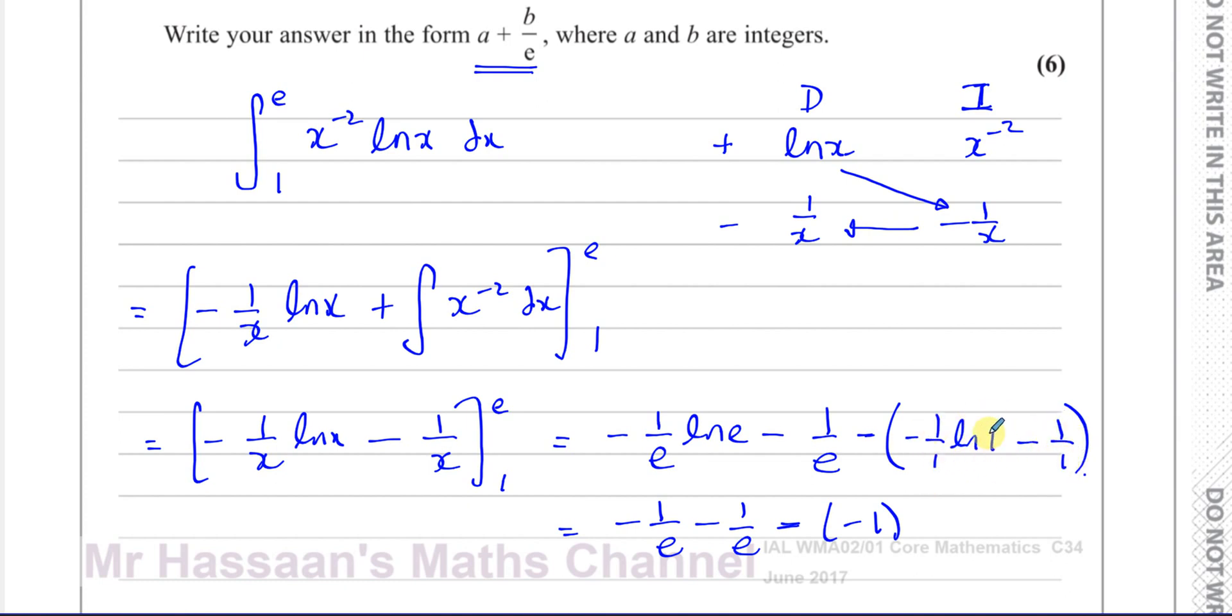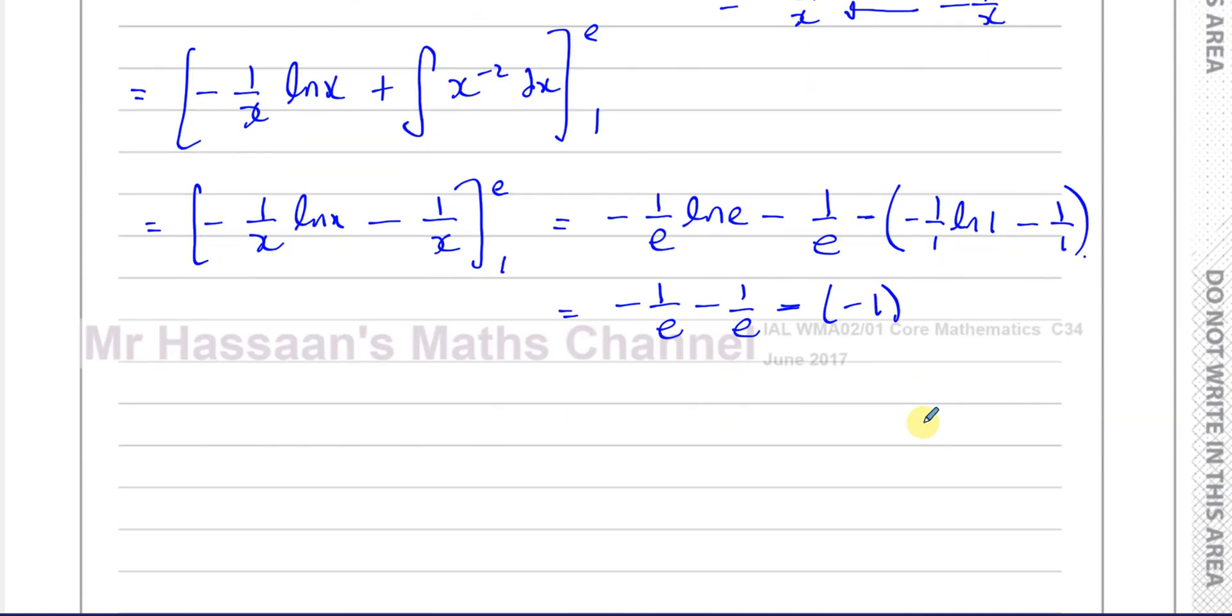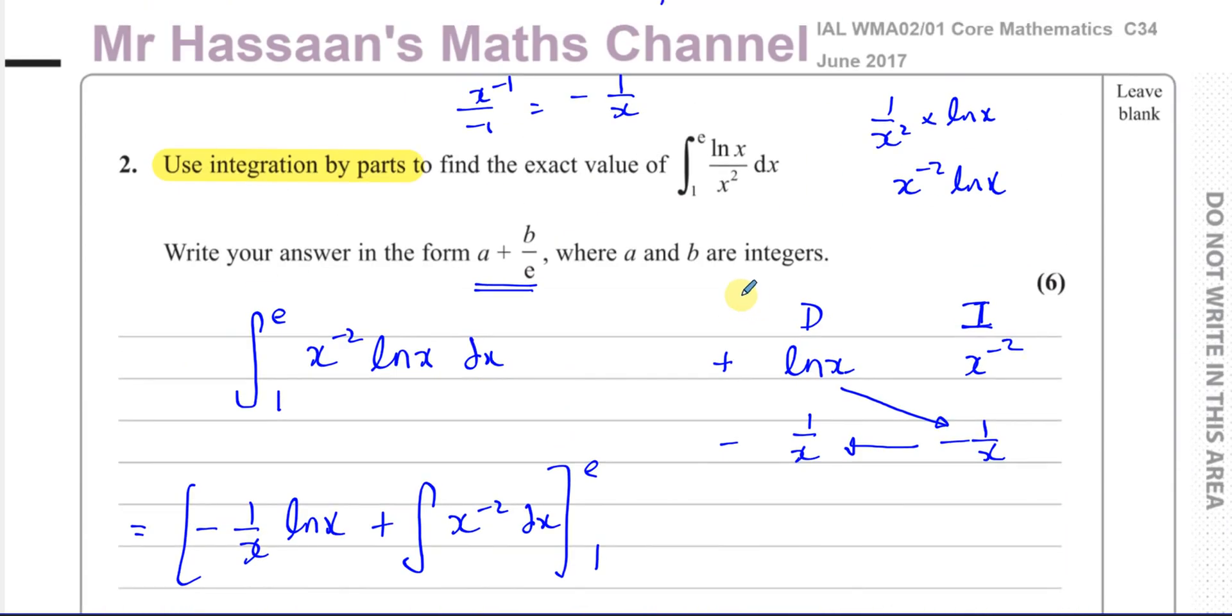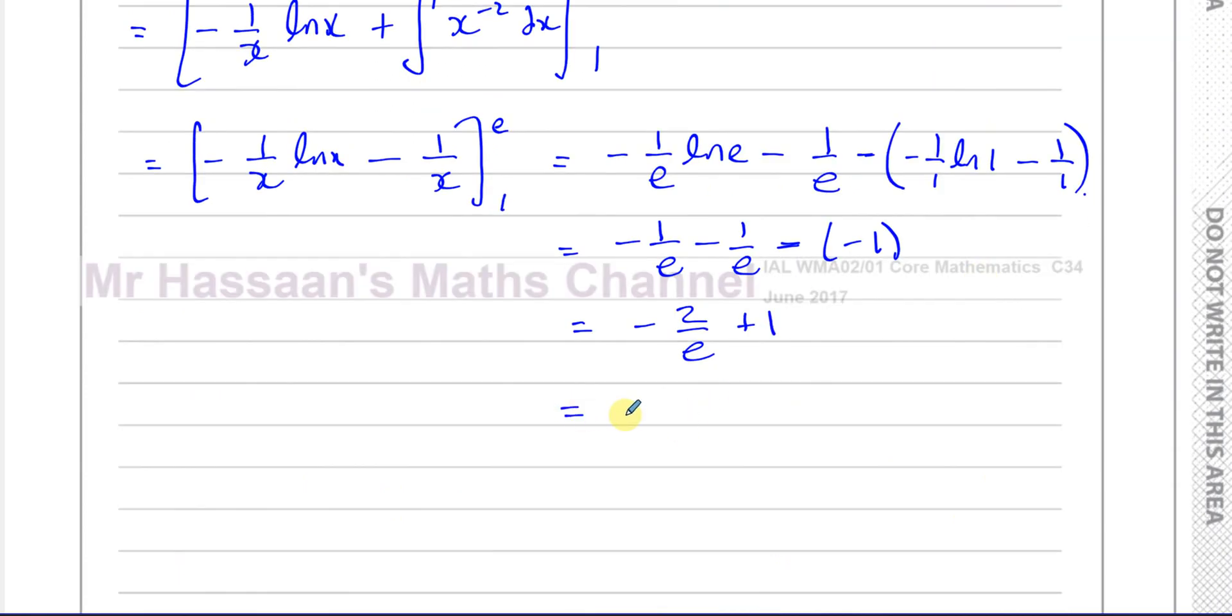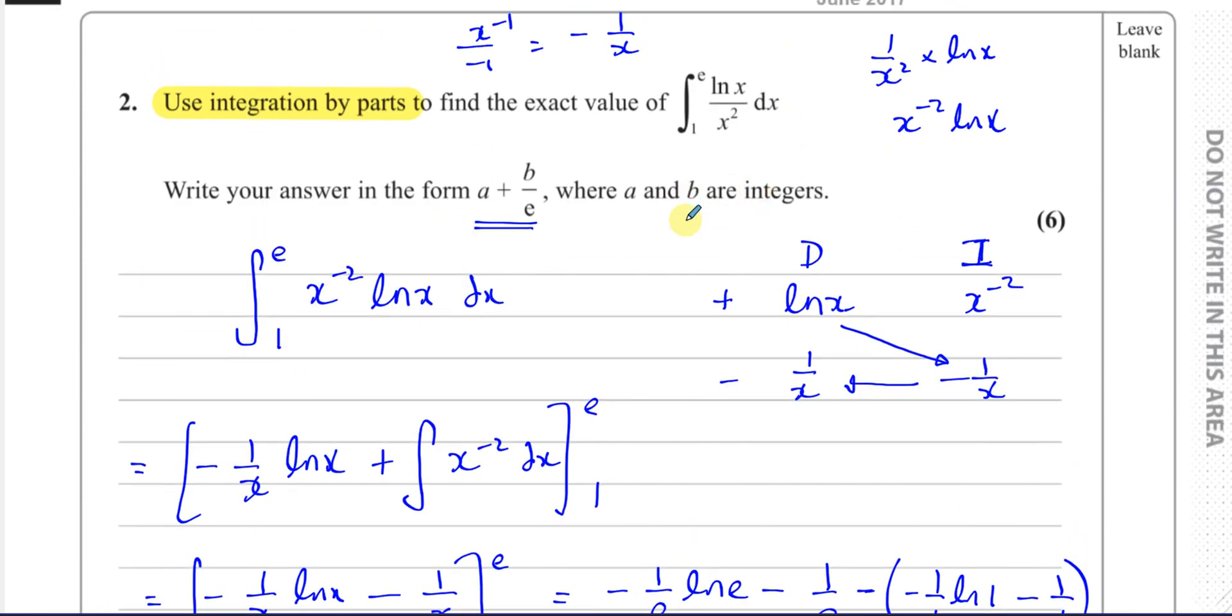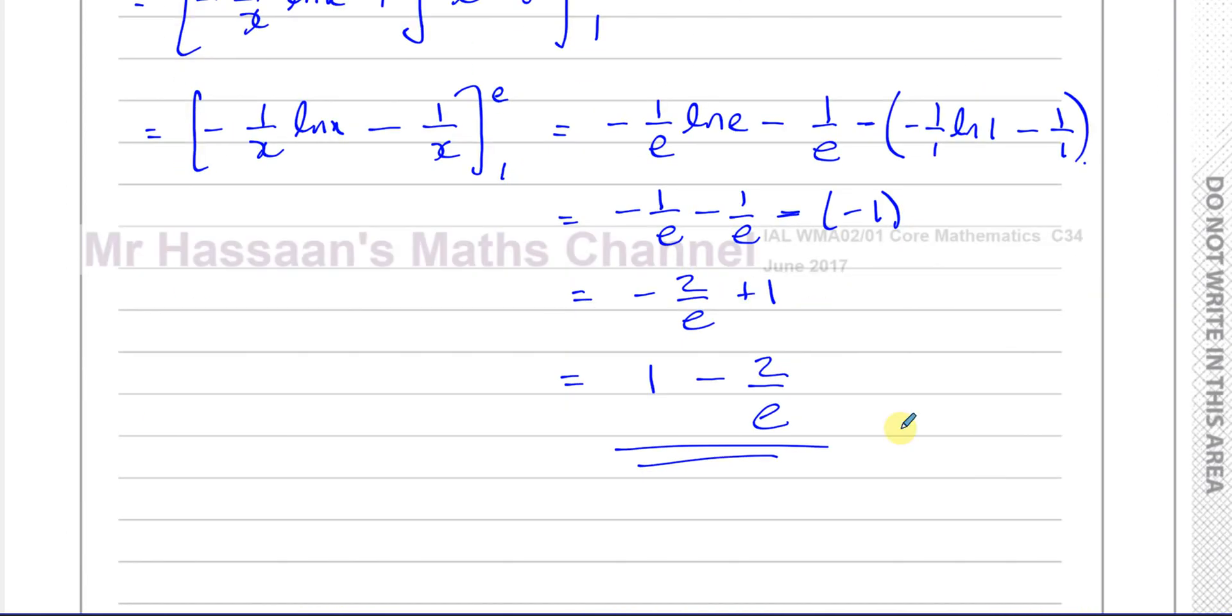This is going to be minus 1 because ln(1) is 0. So now we end up with, here we have the same denominator, we add the numerators, minus 2 over e plus 1. They want to write it in the form a plus b over e, so we just write it as 1 minus 2 over e. So there's our answer in the correct form, where a and b are integers. A is 1 and b is minus 2.